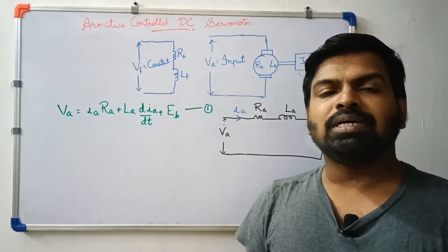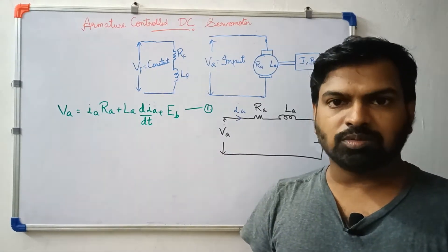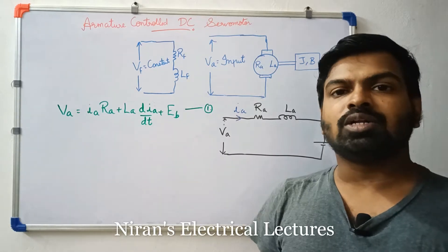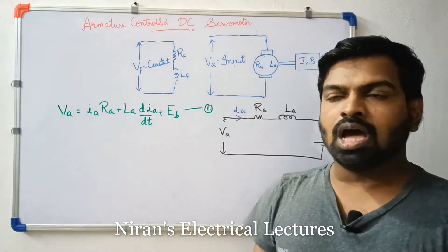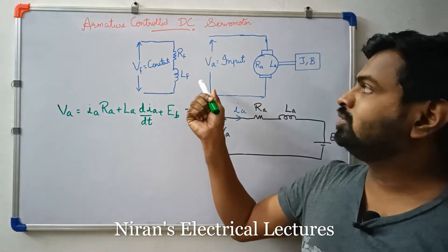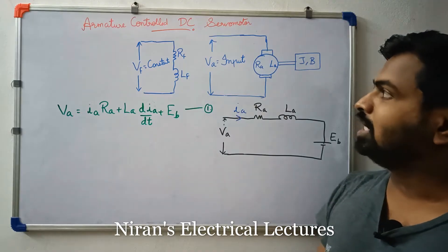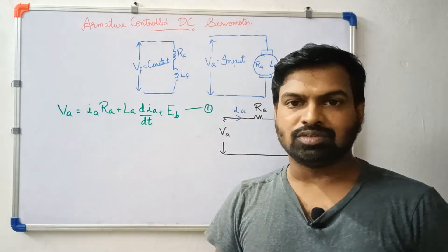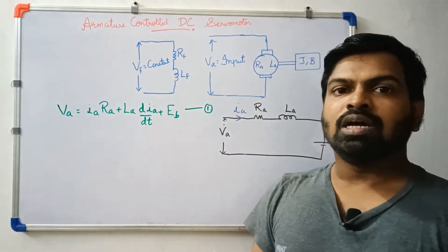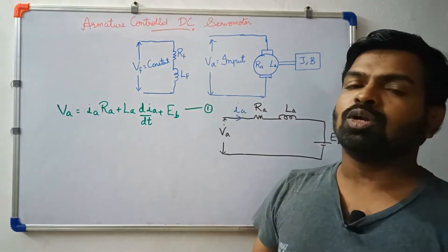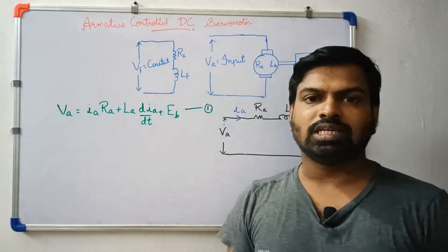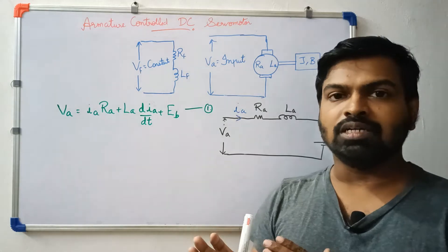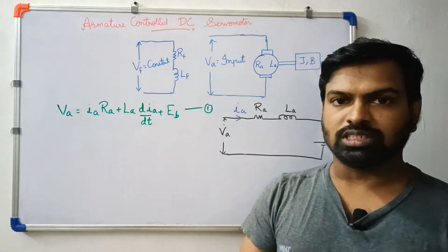Hello friends, we are going to talk about the state model of armature controlled DC servo motor. There is a field winding and armature winding. We are going to talk about the armature control, so the field is constant.